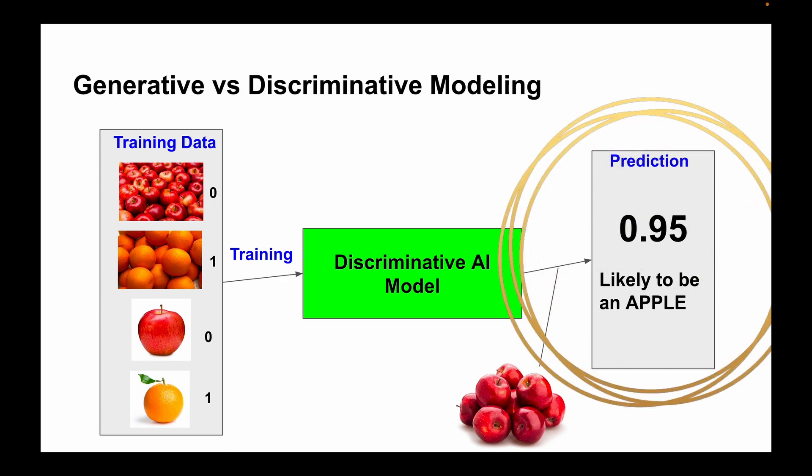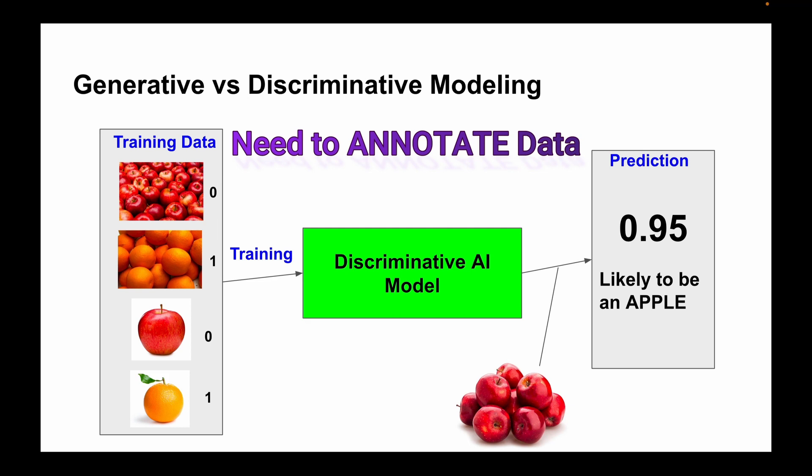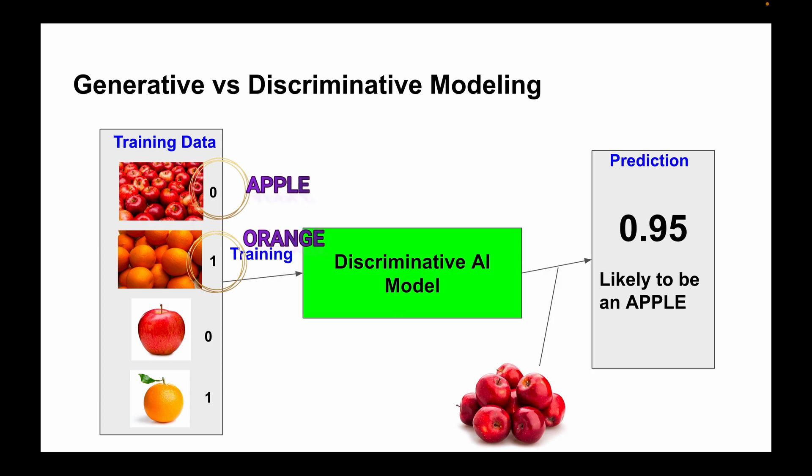And it would output a prediction with a particular confidence. So here in this image it predicted that the input image is an apple with 0.95% confidence. One point to highlight here is labeling every image in the training data. We can see here zeros and ones. Zero stands for apple and one stands for orange.